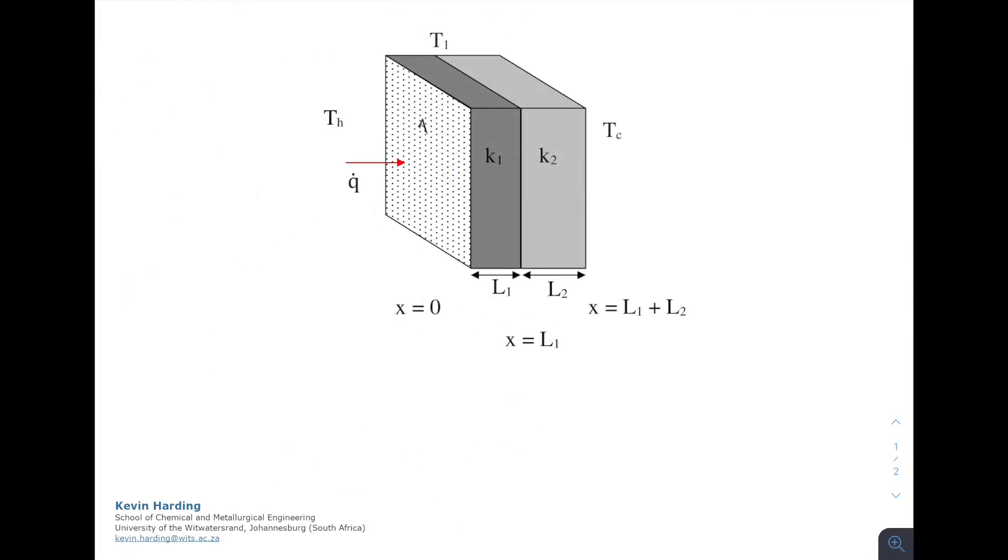If we look at a system of two slabs, like a wall and an insulation layer, we start with Q equals minus Ka dT dx, but look at each wall individually. For slab one, Q1 equals K1 A1 times T hot minus T1 divided by L1. For slab two, Q2 equals K2 A2 times T1 minus T cold divided by L2.